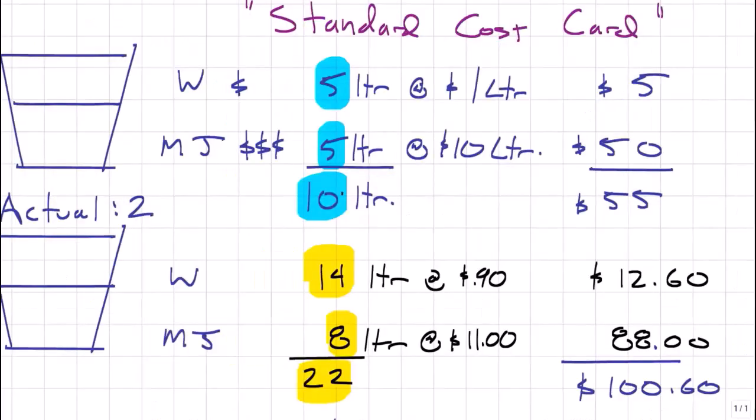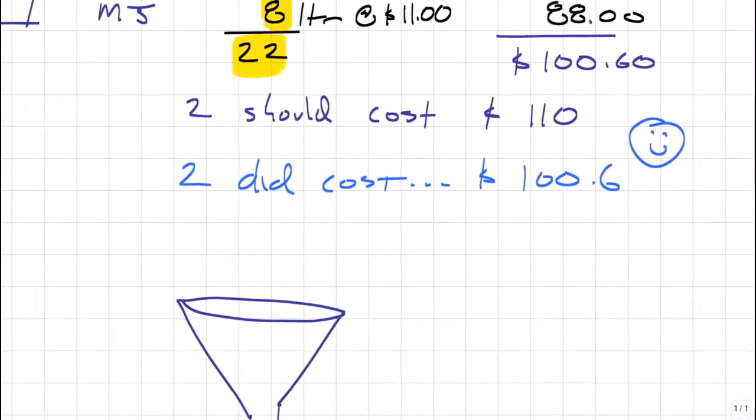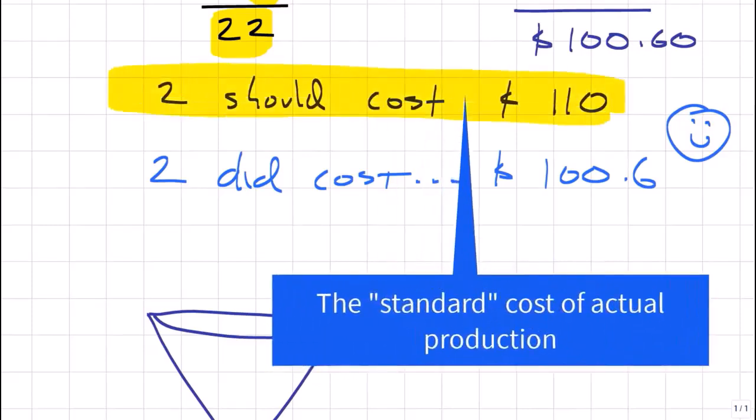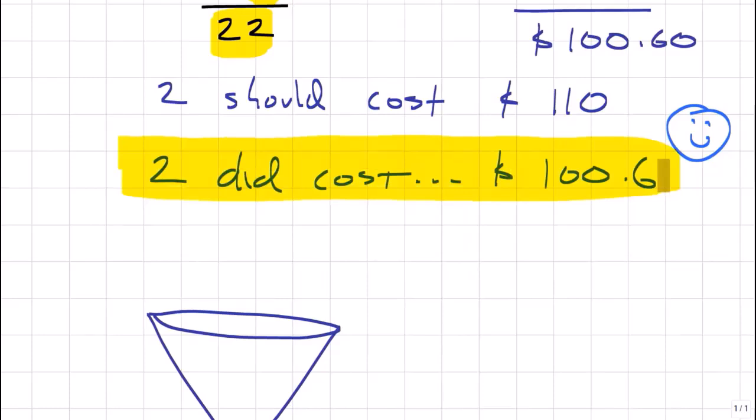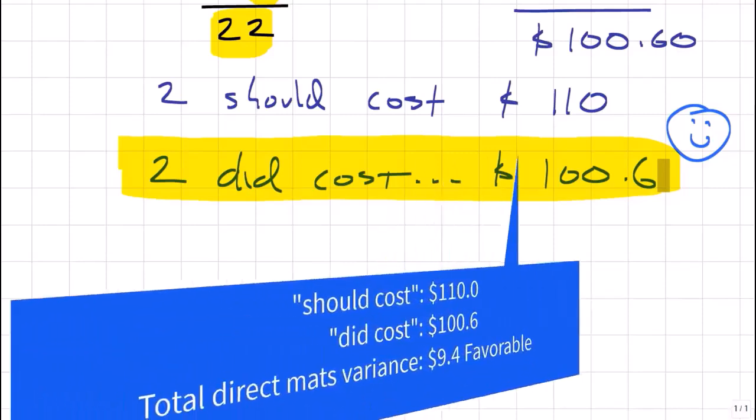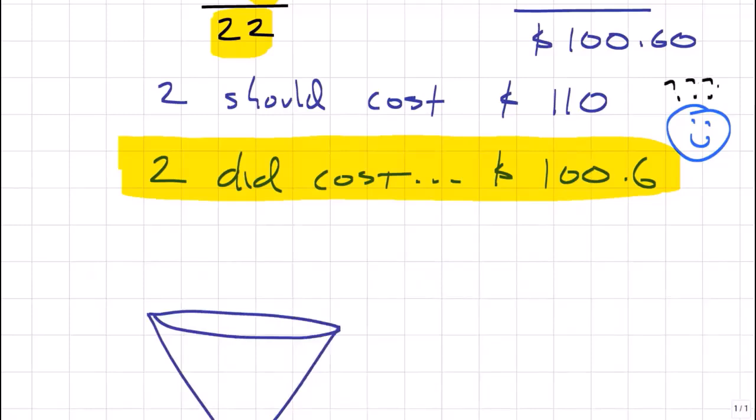Let's now summarize all of this. We said from our standard cost card, one drink should cost 55. So two drinks should cost 110. How much did two drinks cost everybody? Not 110, but 100.60. So we found a favorable total direct materials variance. And now I have a question. Why? What led to that favorable variance? And we said there were three things.